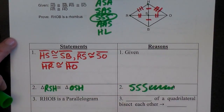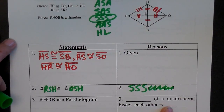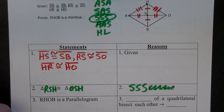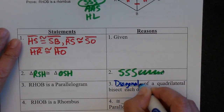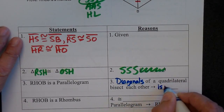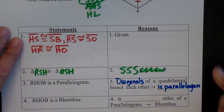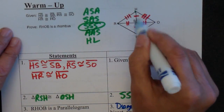Now that I know the triangles are congruent, how do I know RHOB is a parallelogram? That's kind of a tough one. If it's a parallelogram, what do you know about the diagonals in a parallelogram? Because the diagonals of a quadrilateral bisect each other, then it's a parallelogram. And if you look at what we've just proven, I know that S is the midpoint of RO and S is the midpoint of BH.